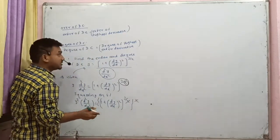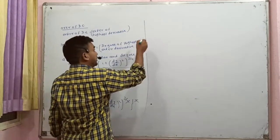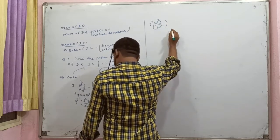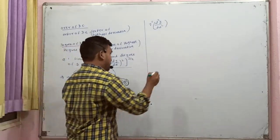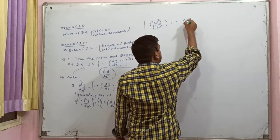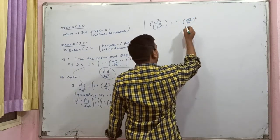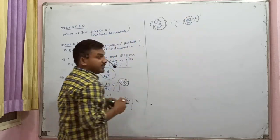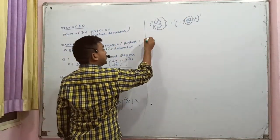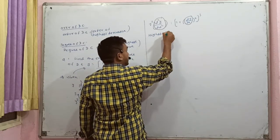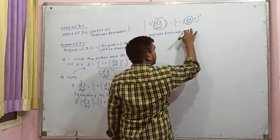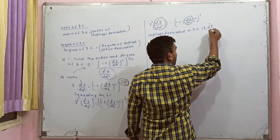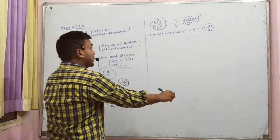Squaring both sides: y squared into d²y/dx² squared is equal to 1 plus dy/dx squared, whole to the power 3. After squaring, the fraction in the power is cancelled. The highest derivative in this differential equation is d²y/dx².